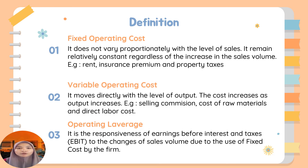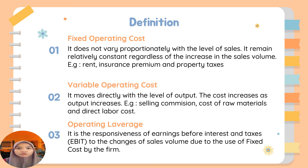Variable operating cost moves directly with the level of output — the cost increases as output increases. Examples include selling commission, cost of raw material, and direct labor cost. Operating leverage is the responsiveness of earnings before interest and tax (EBIT) to the change in sales volume due to the use of fixed costs by the firm.